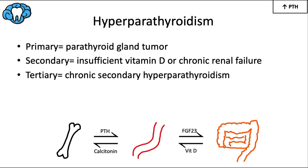Hyperparathyroidism involves overproduction of parathyroid hormone, removing too much calcium from bone and moving it into the bloodstream. Primary hyperparathyroidism is the most common type and usually involves a benign tumor of the parathyroid gland leading to hypercalcemia; it's typically treated by surgical removal of the tumor. Secondary hyperparathyroidism involves insufficient vitamin D or chronic renal failure, which leads initially to hypocalcemia, causing the parathyroid glands to compensate by secreting more PTH.